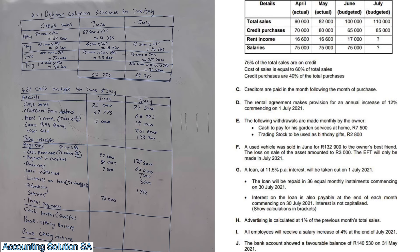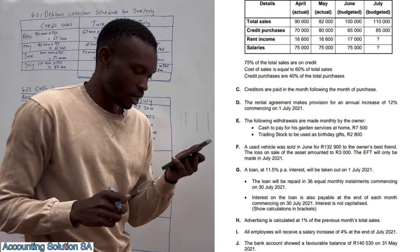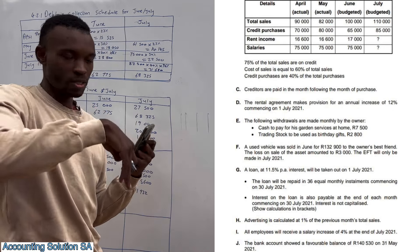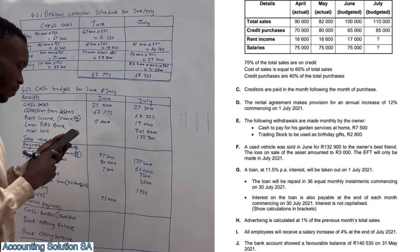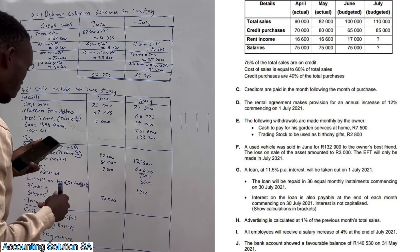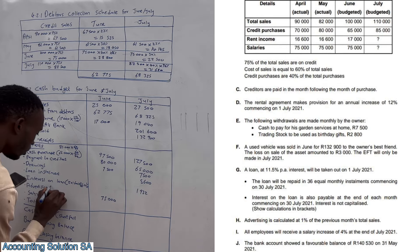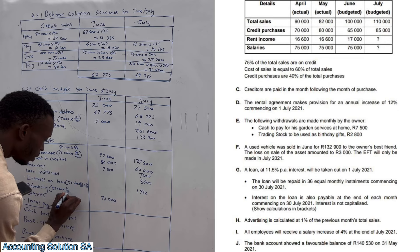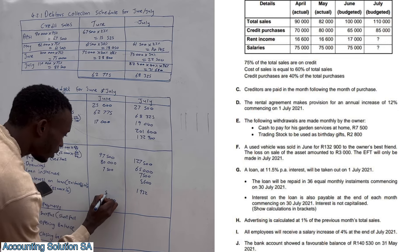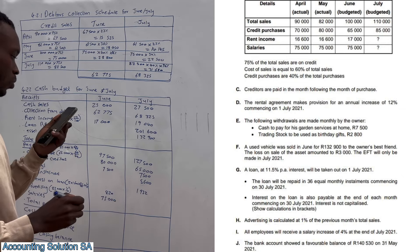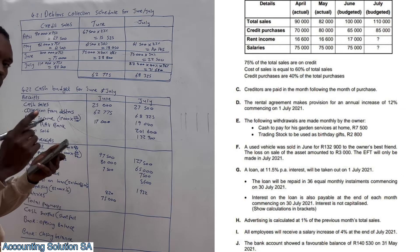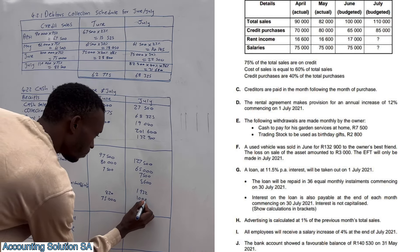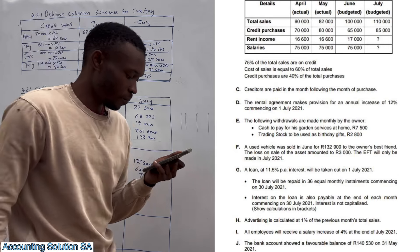Advertising is calculated at 1% of the previous month's total sales. For June we use May's sales: 82,000 multiplied by 1% gives 820. For July we use June's sales: 100,000 multiplied by 1% gives 1,000. Very simple.